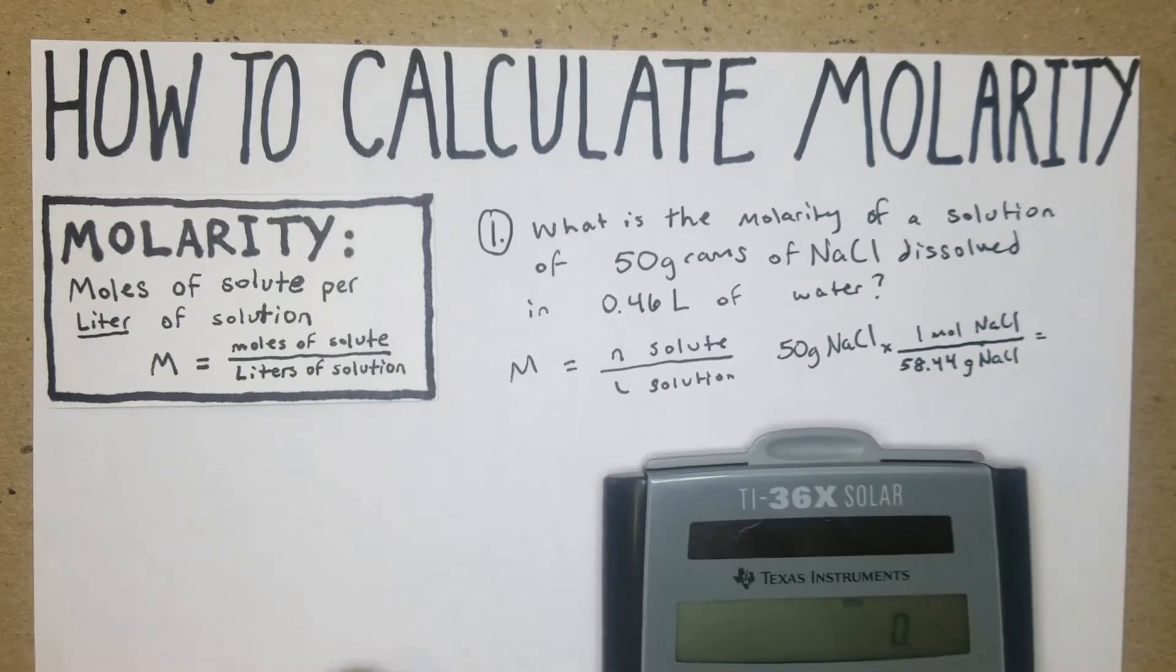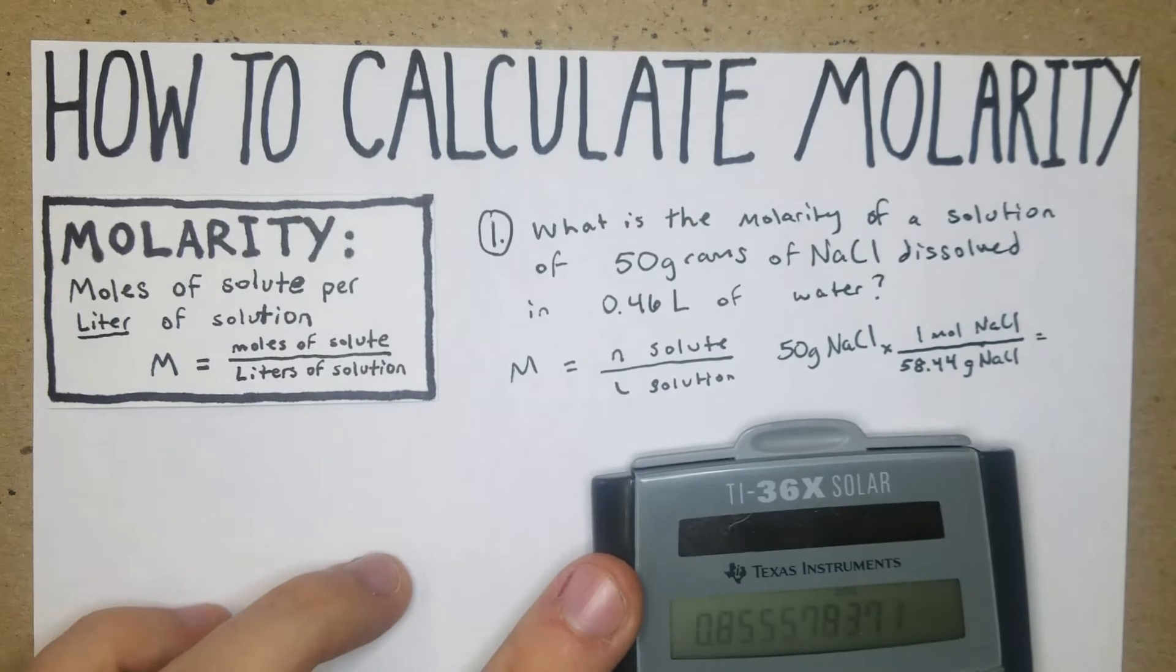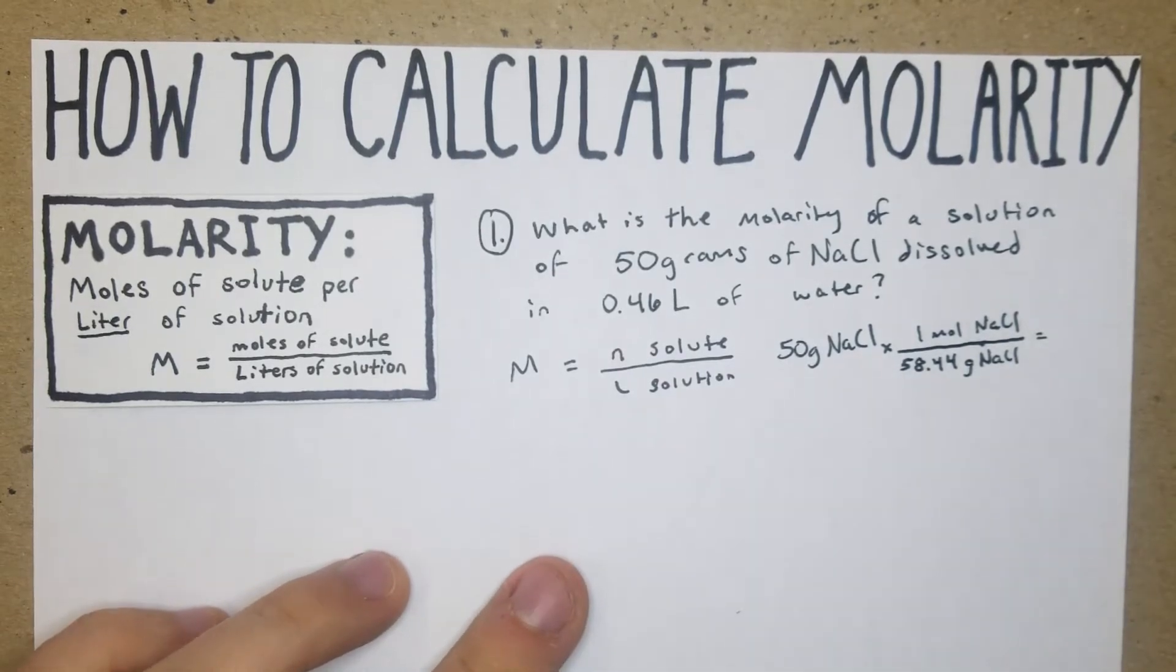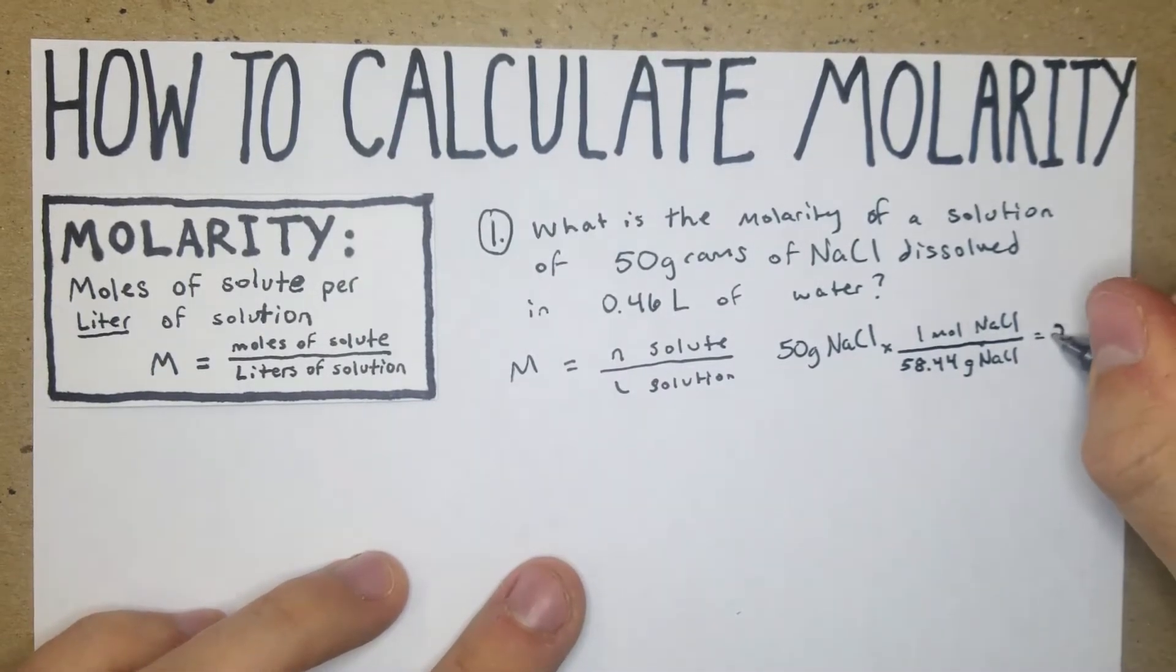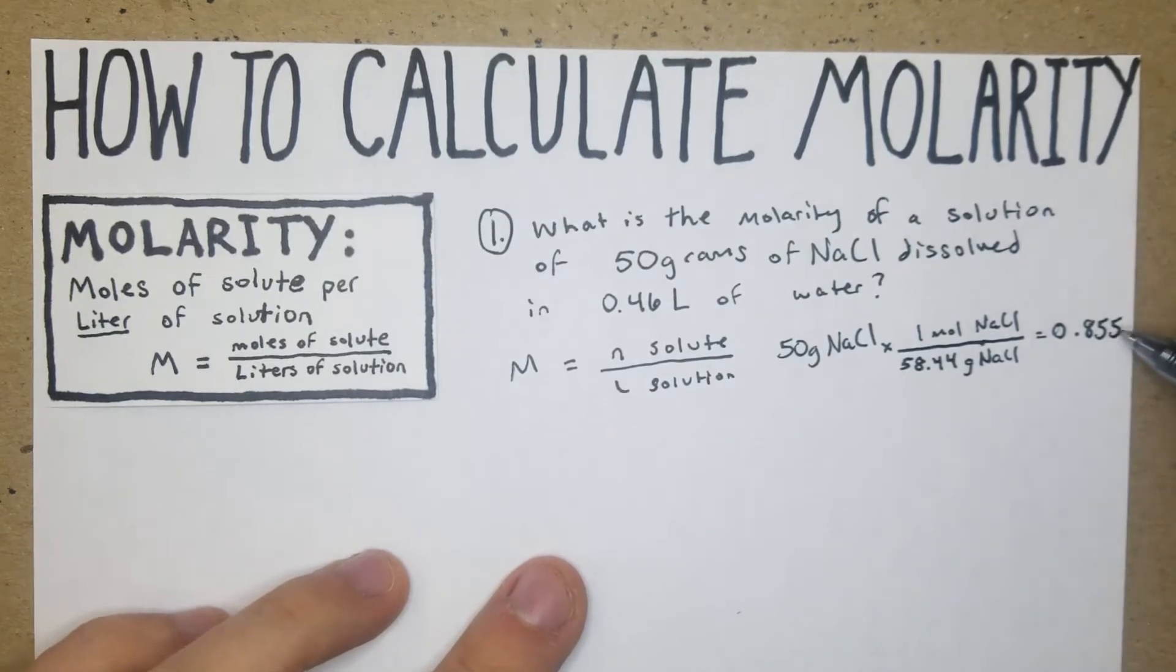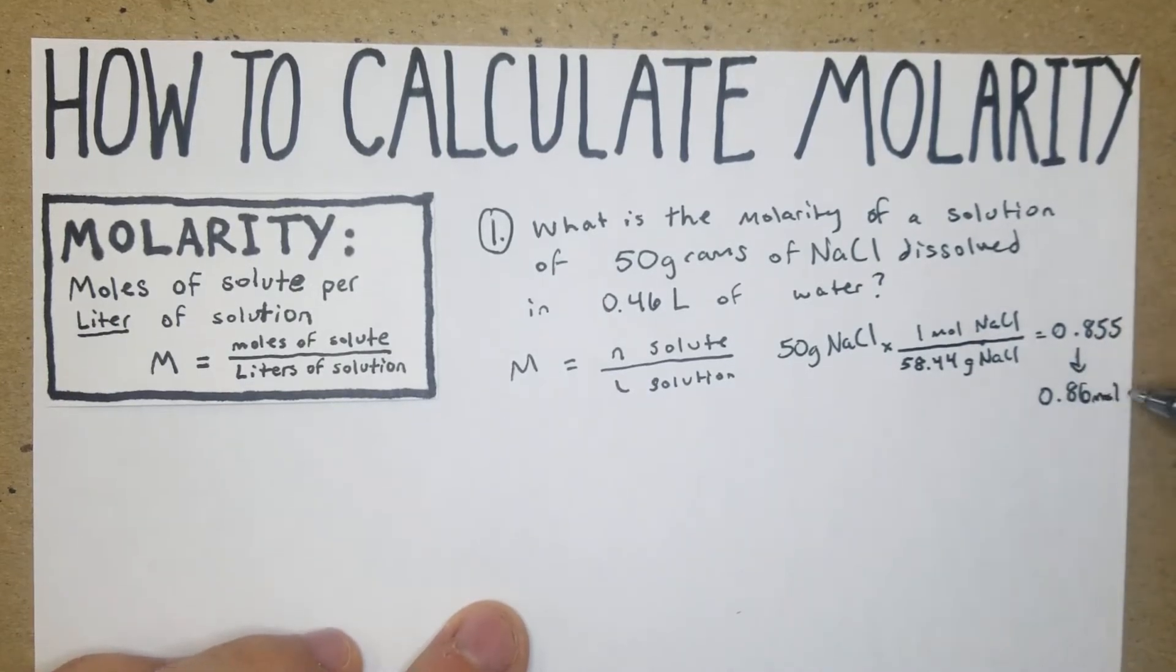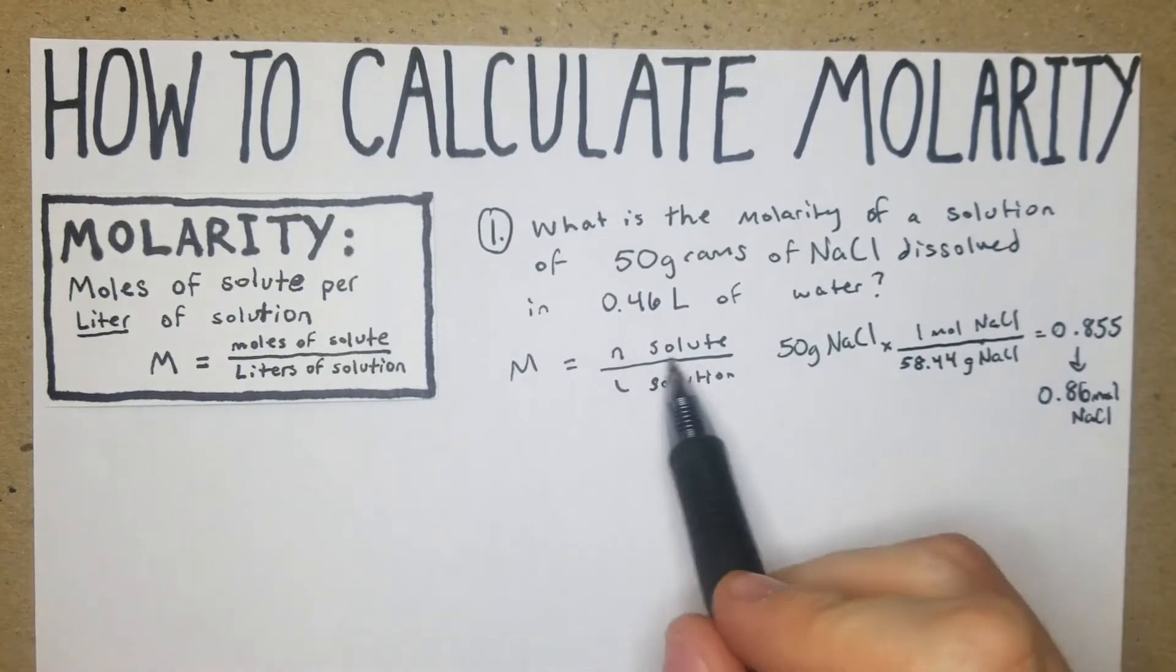We're going to have our 50 divided by 58.44. We're going to get 0.855, and we can round that up to 0.86 moles of NaCl.